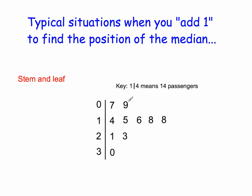The same applies for a stem and leaf diagram, because a stem and leaf is just a list of numbers — 7, 9, 14, and so on. With 10 numbers in the stem and leaf, I'd do 10 + 1 = 11, divided by 2, which is the 5.5th value. Counting through to the 5.5th position gives the value 17. So you still take the number of numbers, add 1, and divide by 2.